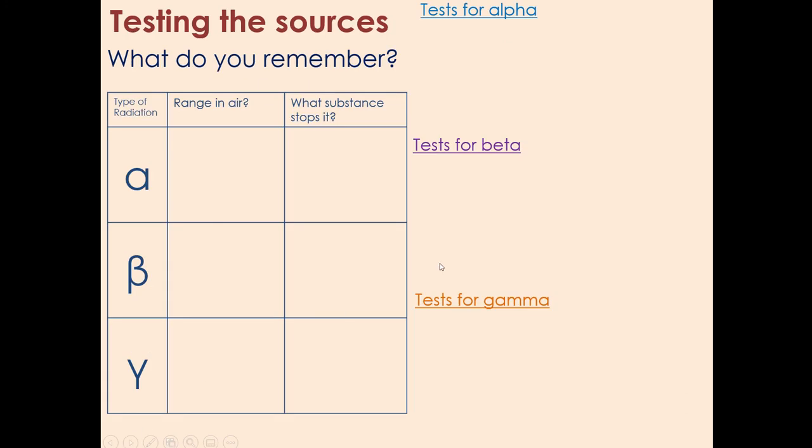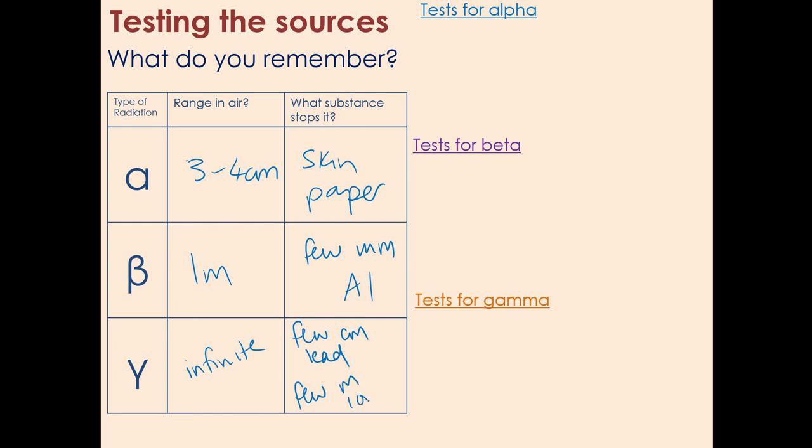What would the results actually show you then? To understand this we've got to link back to what we did in video two, which is the range in air and what stops each substance. We know that the range of alpha is three to four centimeters and it's stopped by skin or paper. We know that the range of beta is a meter and it is stopped by a few millimeters of aluminium. And we know that the range for gamma is infinite and it's either a few centimeters of lead or a few meters of concrete.